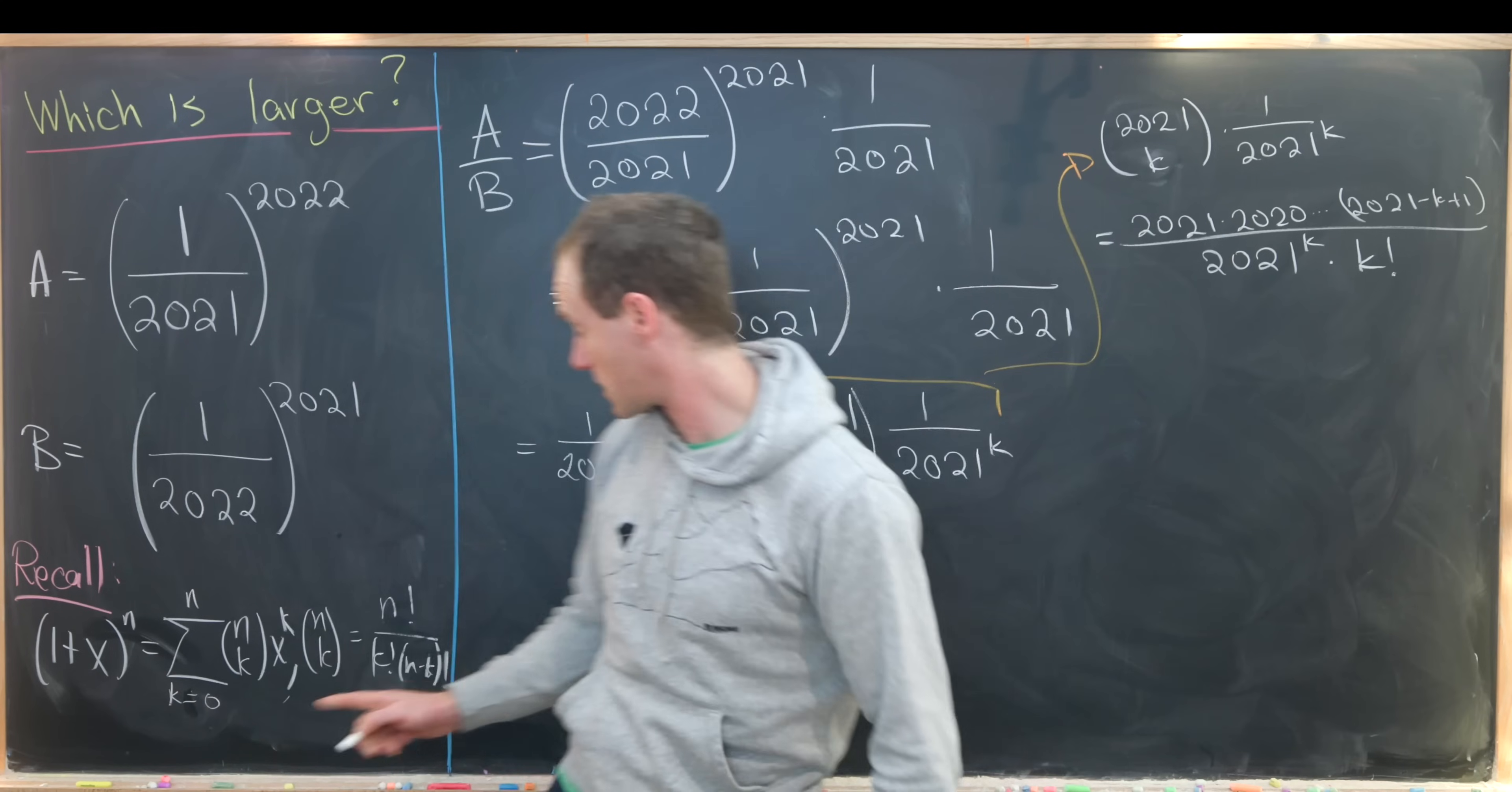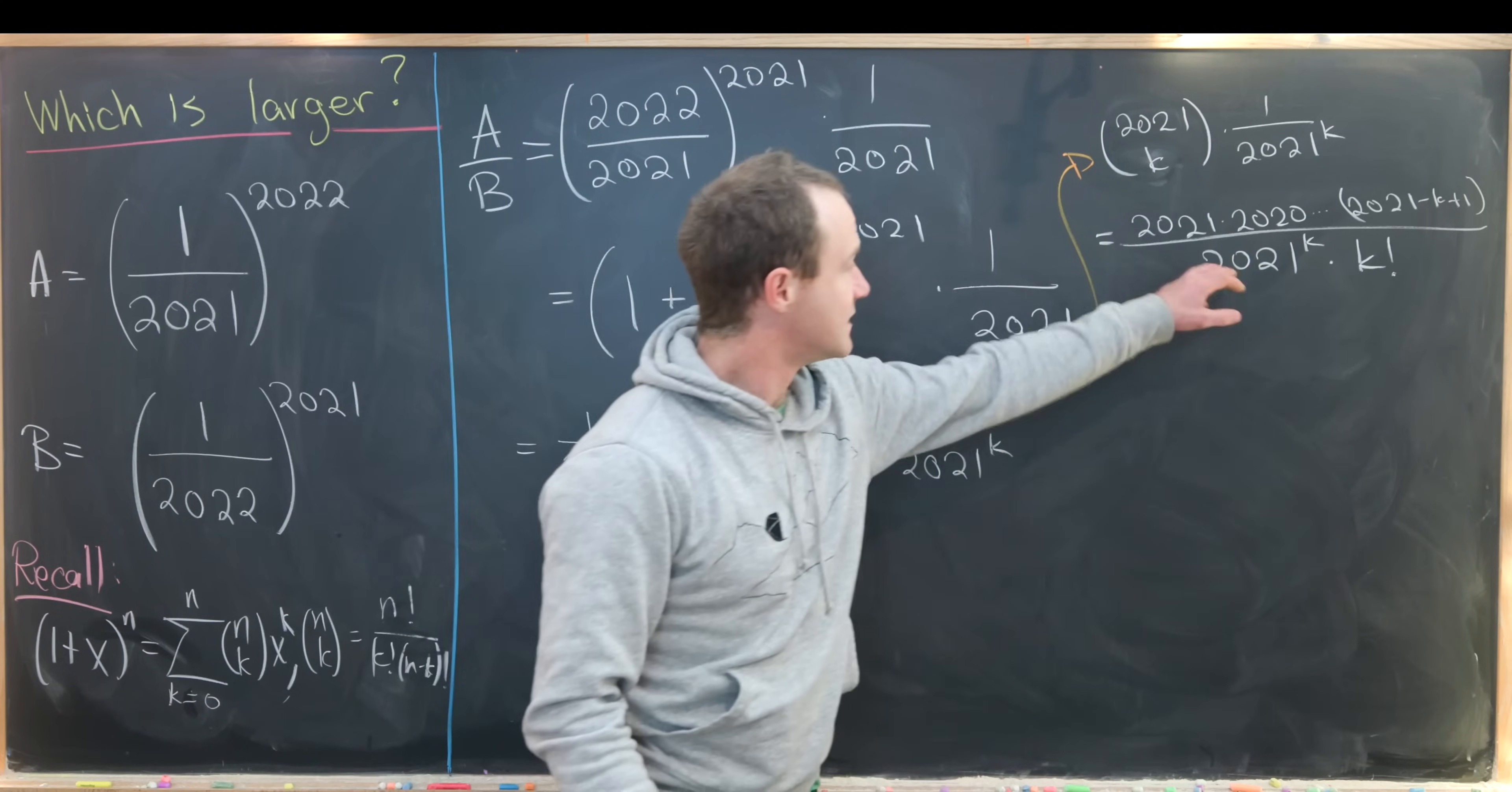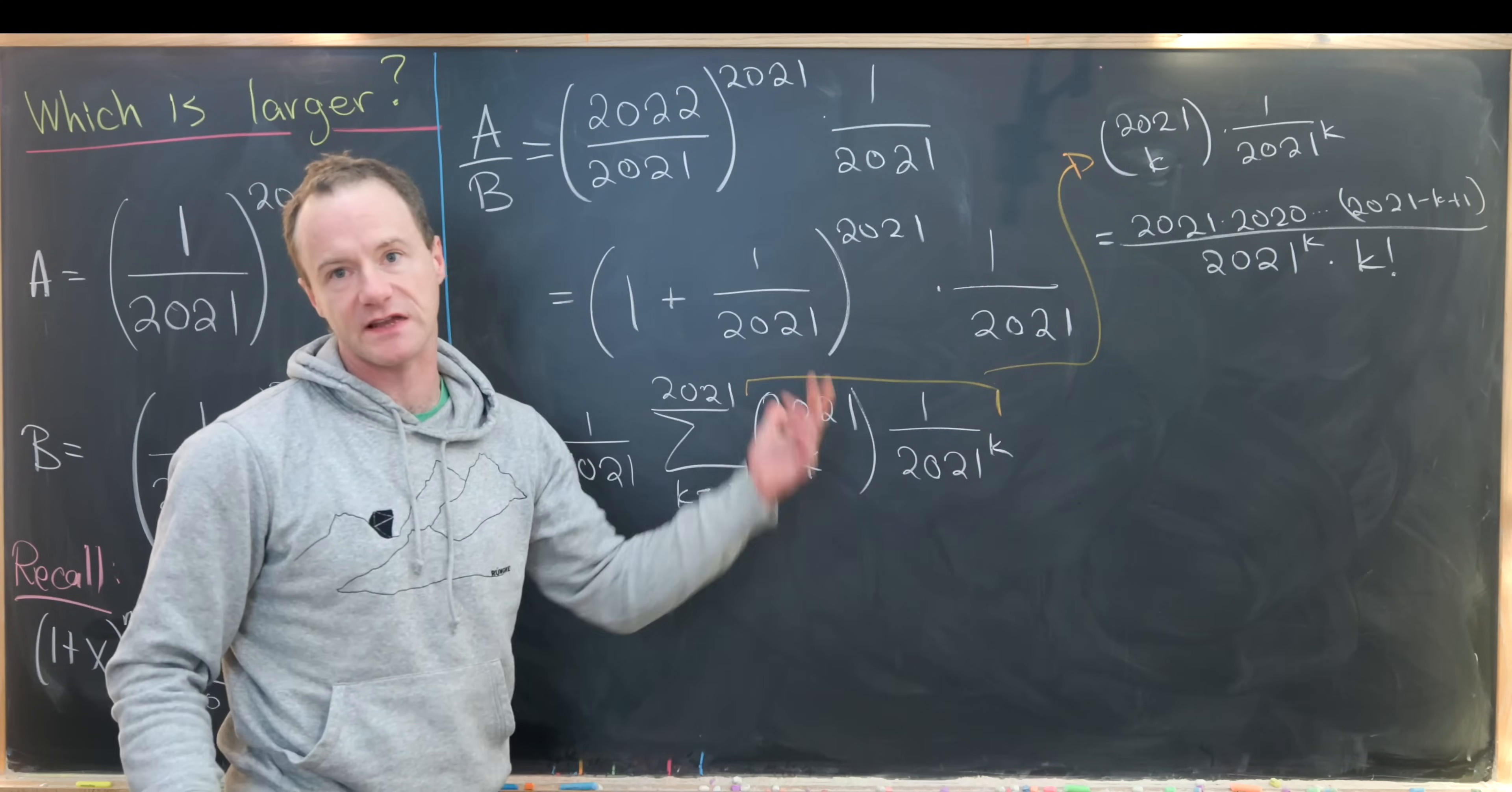In the denominator we have 2021 to the k times k factorial. The k factorial comes from the binomial coefficient and the 2021 comes from that 2021.